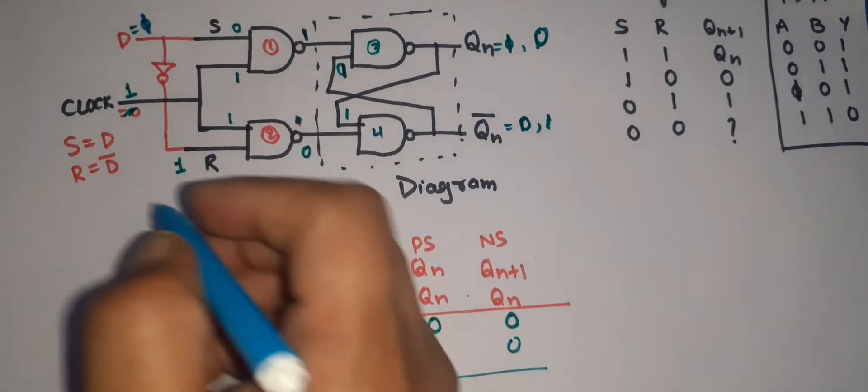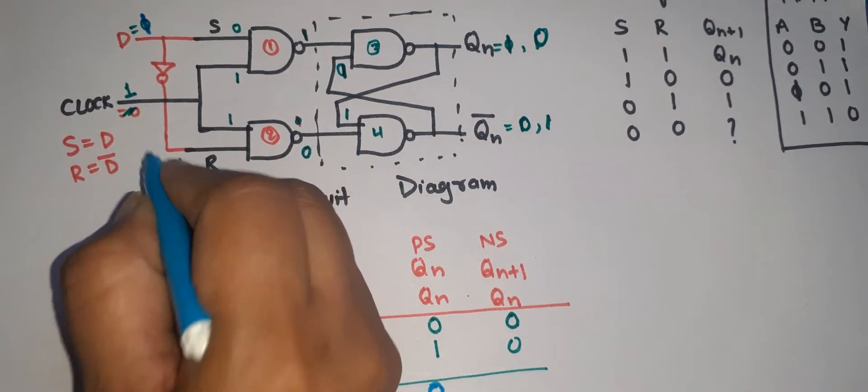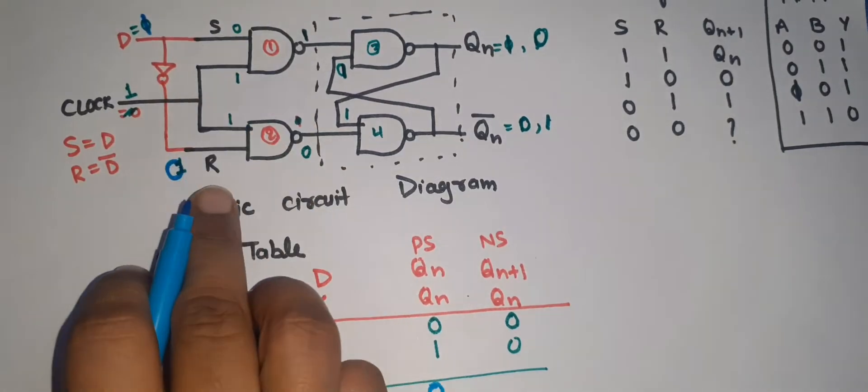When D is one, through the NOT gate S becomes zero, meaning gate number one gets input zero, so output is one. R is one — both inputs to gate number two are one, so output is zero.